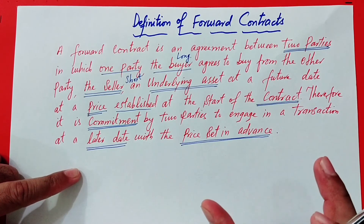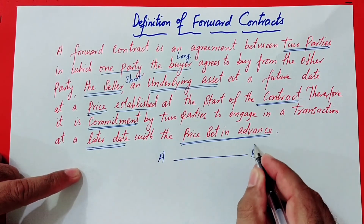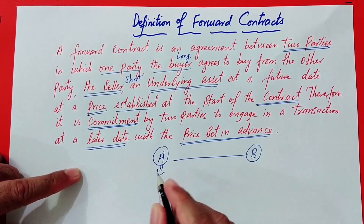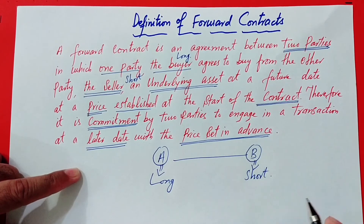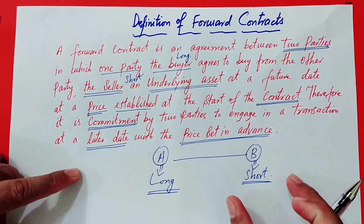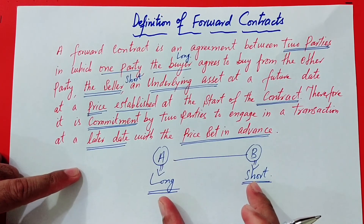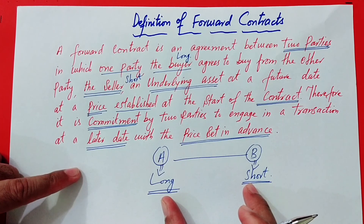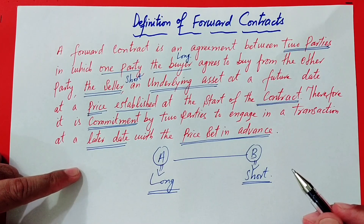So this is our definition of forward contracts — two parties are involved. That means A and B: A will be the long buyer and B will be the short seller. Forward contracts involve two parties who know each other and make customized contracts. Forward contracts are customized contracts, whereas futures contracts are standardized contracts — they are not customized according to the customer's requirements.